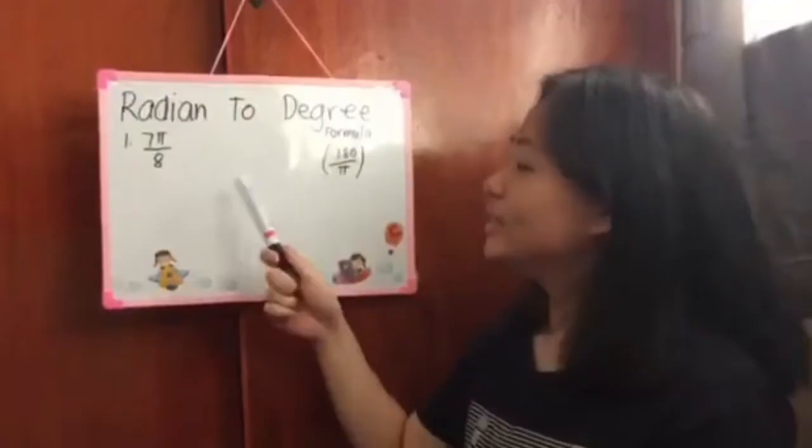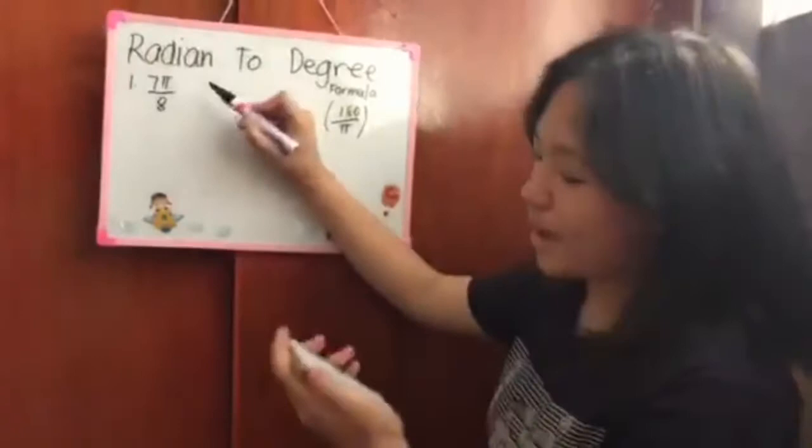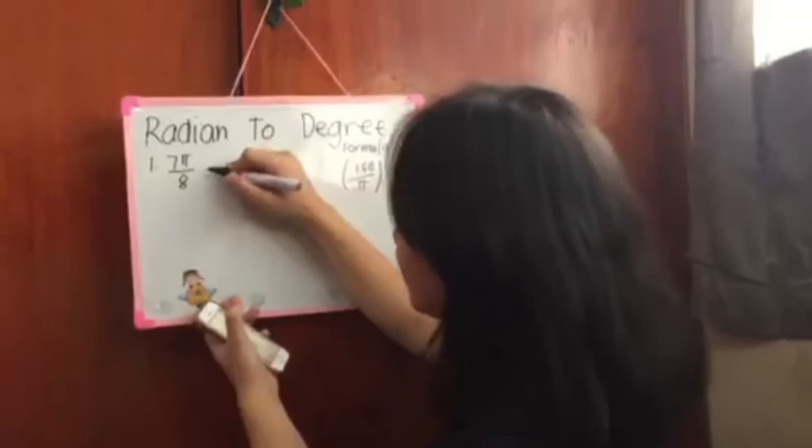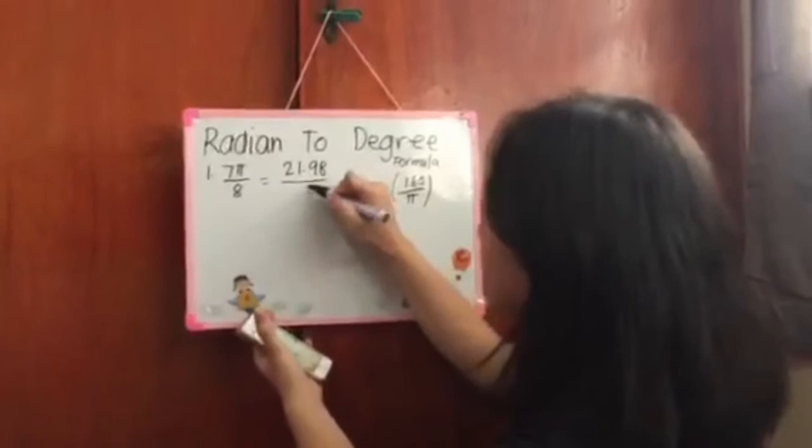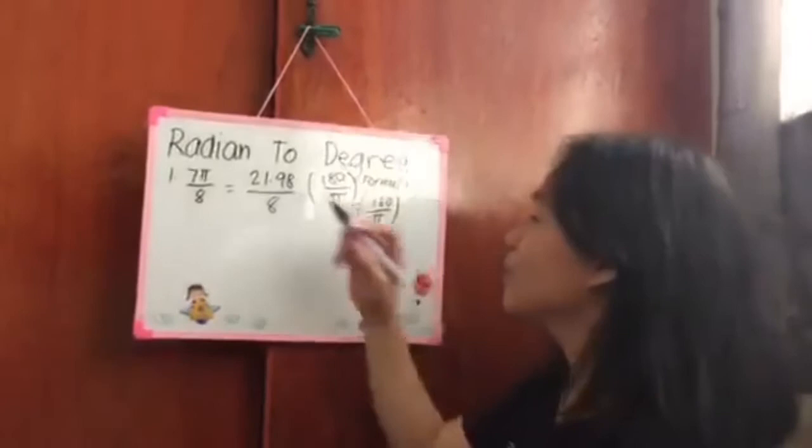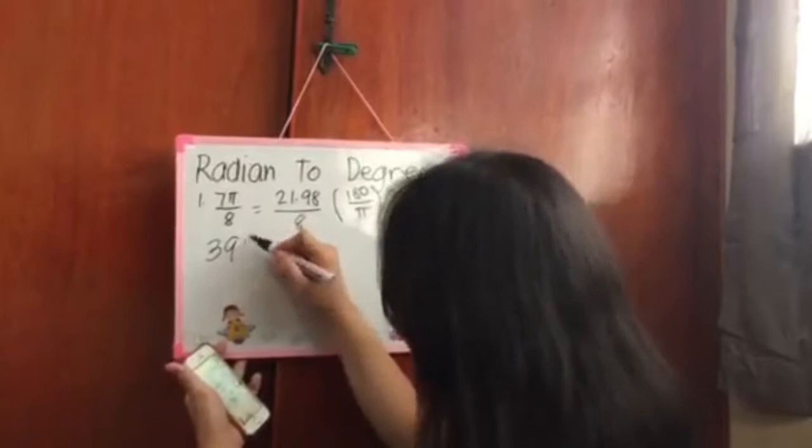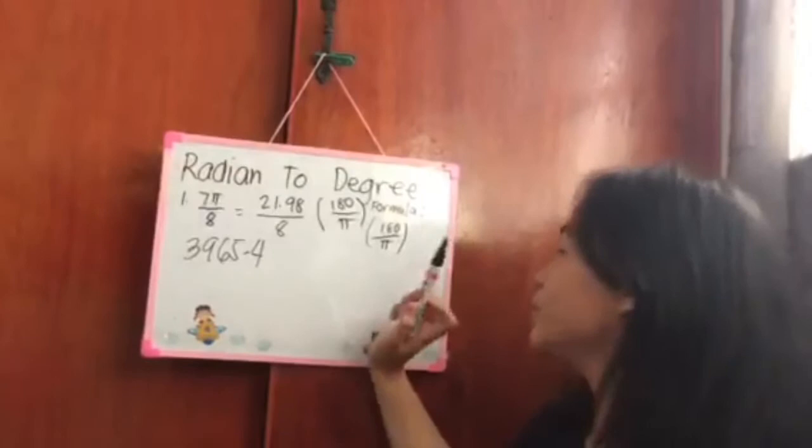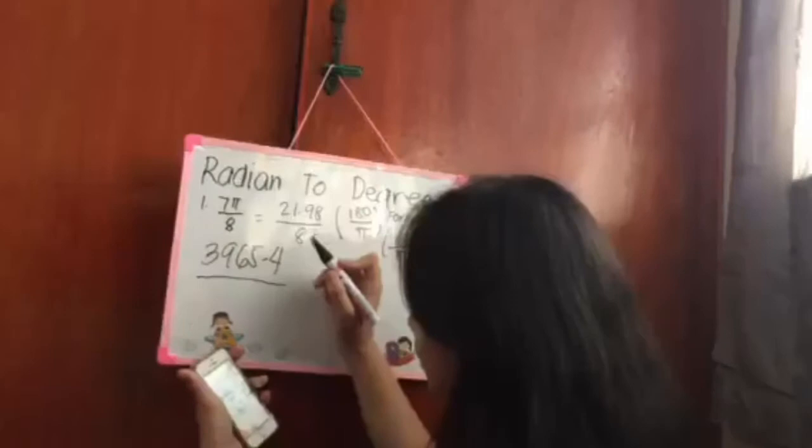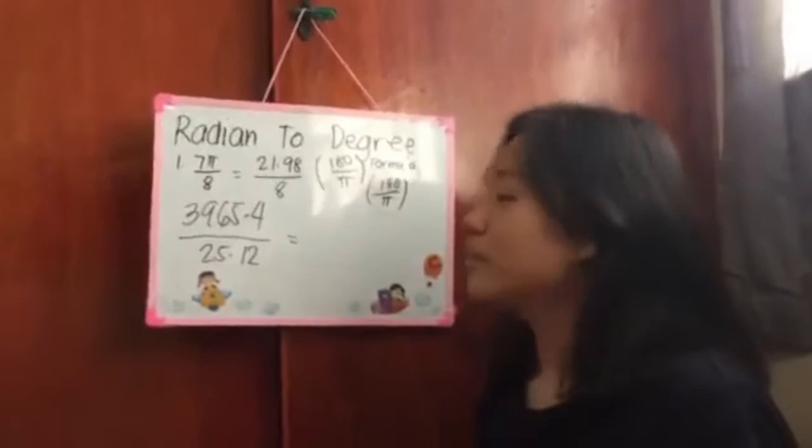7 pi over 8. First multiply 7 by pi which is 3.14. The result is 21.98. Then divide by 8. After you get that, multiply it by 180 over pi which is the formula. 21.98 times 180 equals 3,965.4. Then 8 times pi which is 3.14, the result is 25.12. When you get those two, divide 3,965.4 by 25.12. The answer is 157.86 degrees.